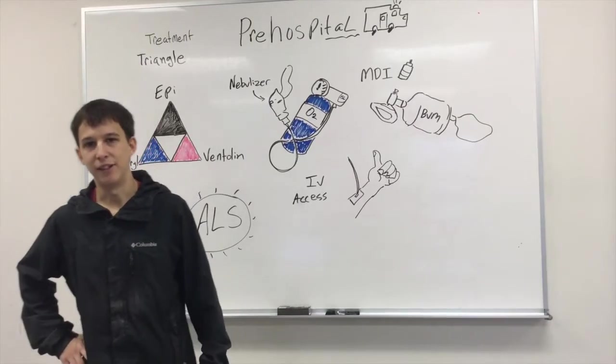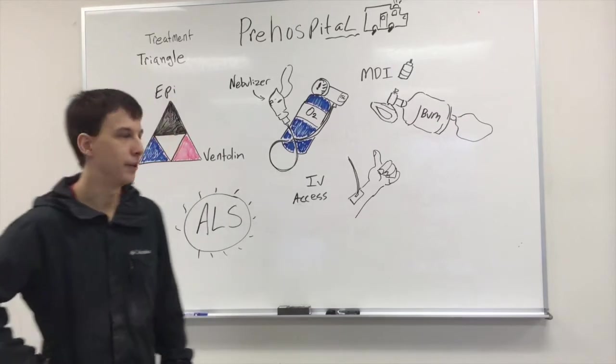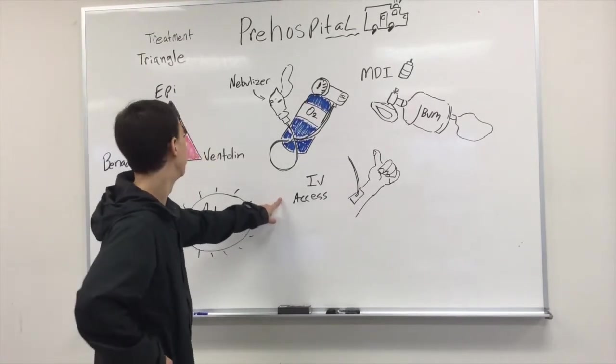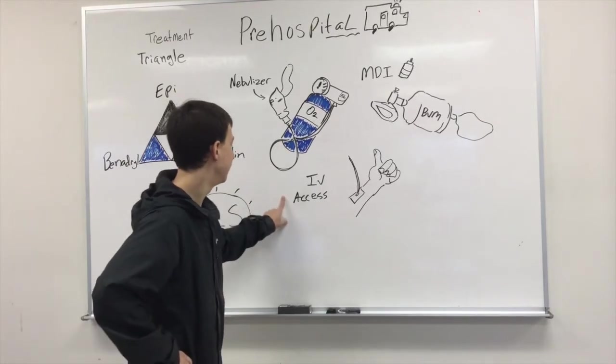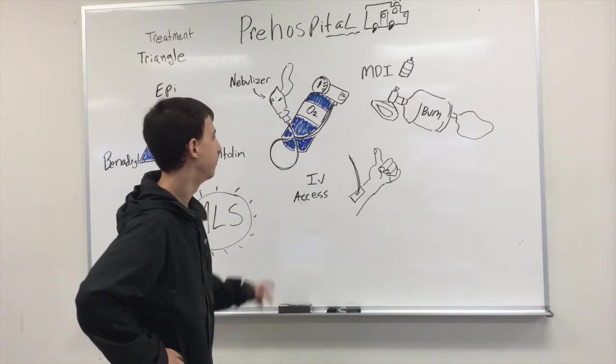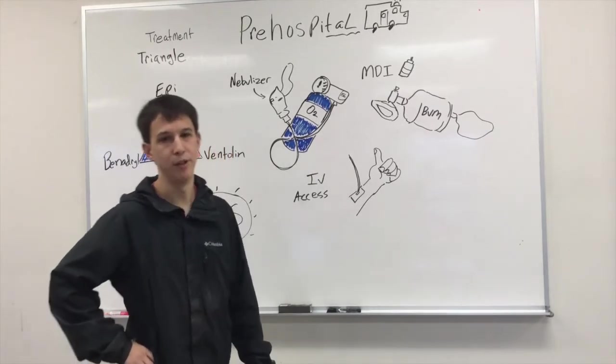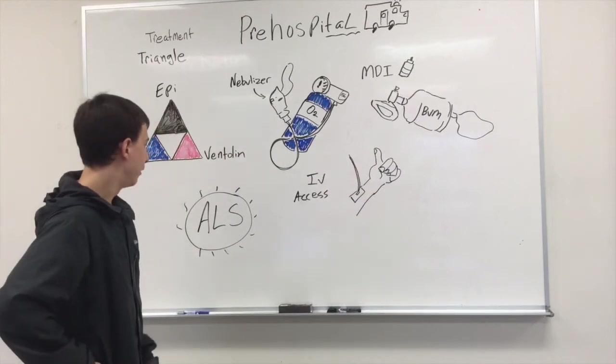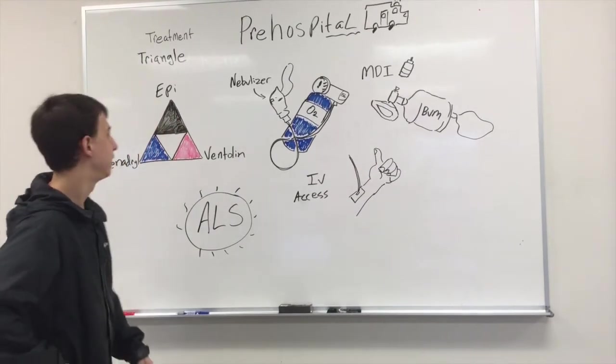After you assess your patient and suspect anaphylaxis, you'll want to get IV access and administer high-flow O2 to your patient while your partner is drawing up your medications. If your patient is breathing adequately on their own, you want to give them high-flow O2 via non-rebreather. If they are not, you'll want to use the BVM. Once your medications are drawn up, the first thing you want to do is give them epinephrine 1:1000 via IM.